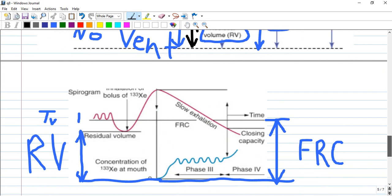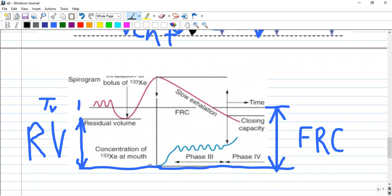How about closing capacity? Residual volume and closing capacity is just above the residual volume. If you trace a line you will see that closing capacity is a little bit up of volume.